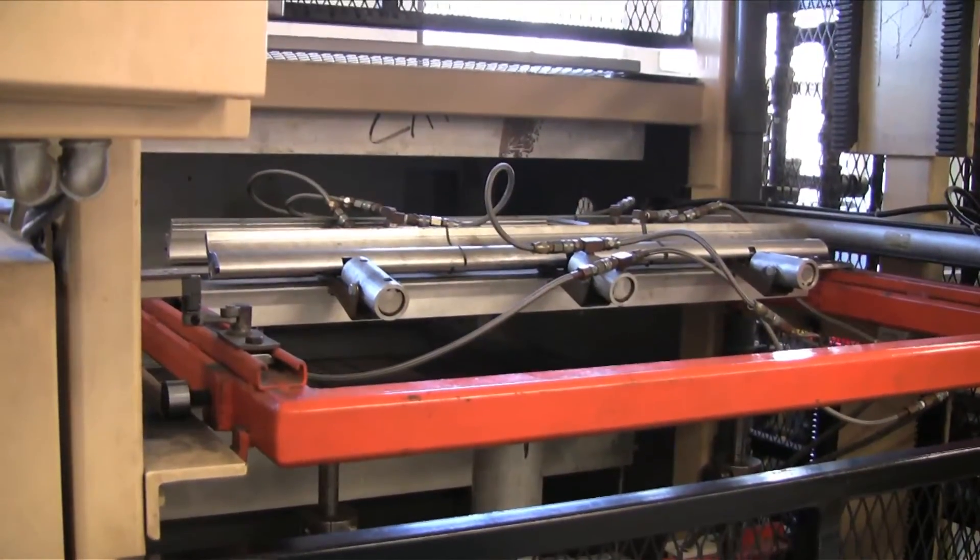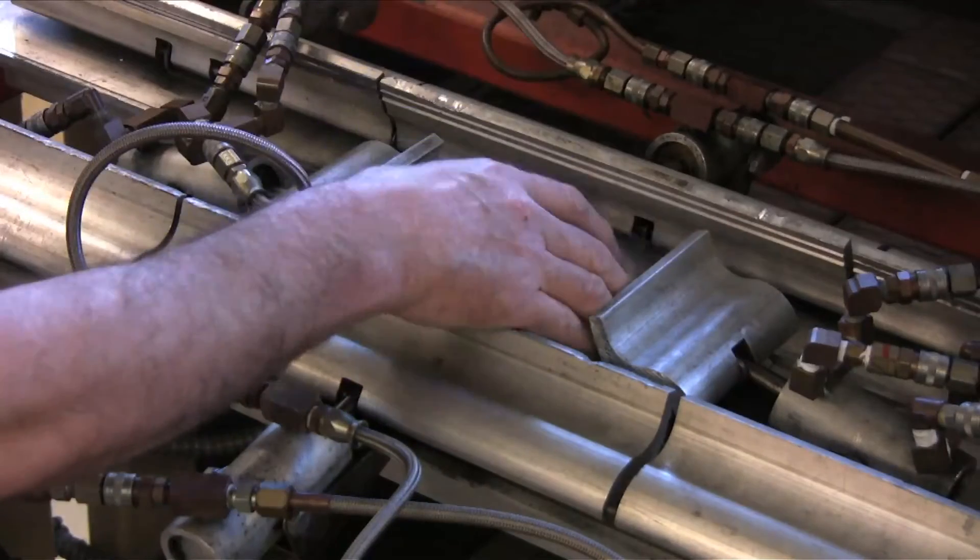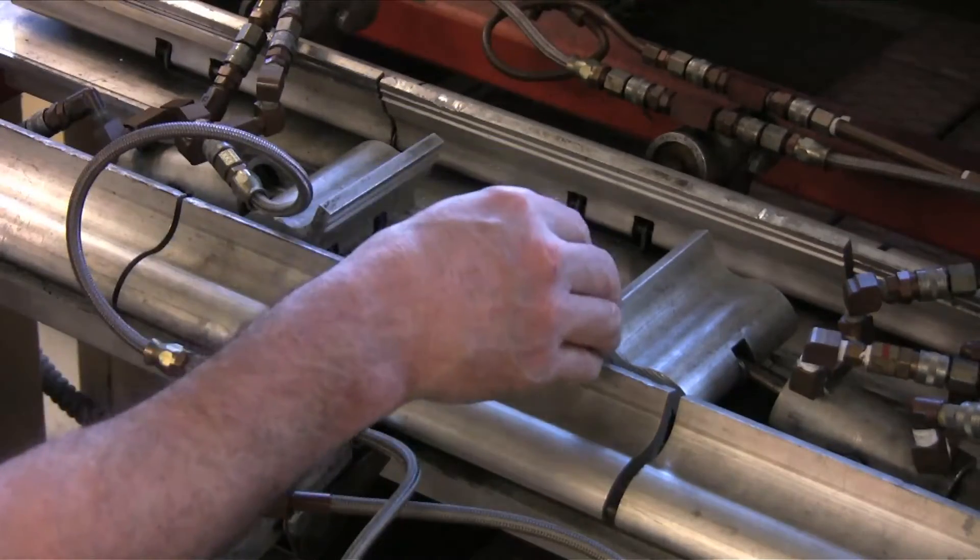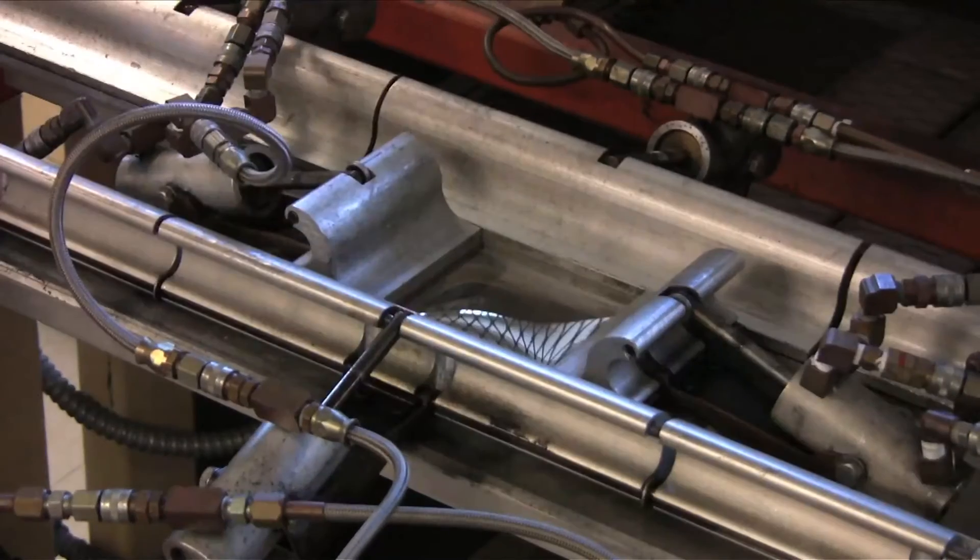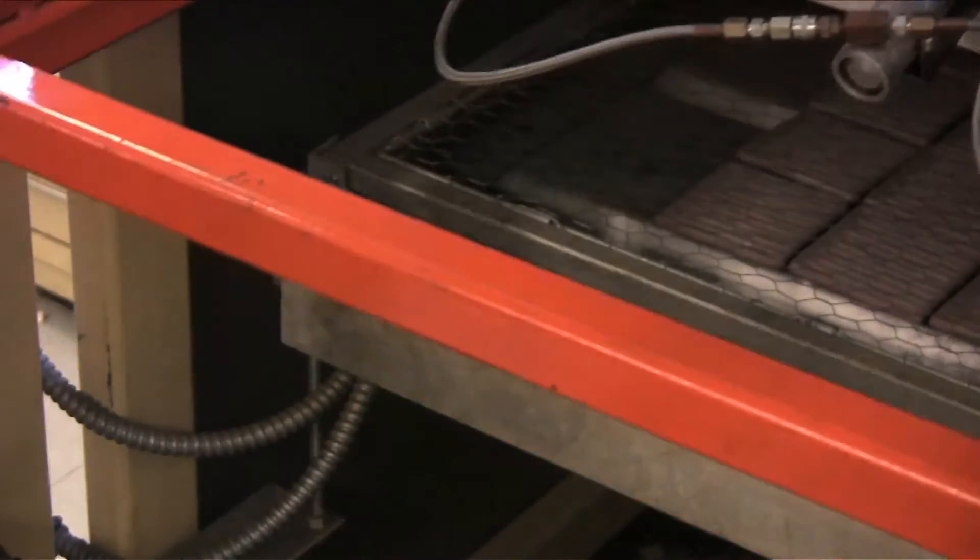Thermoforming takes a heated sheet of thermoplastic material and elastically deforms it above its glass transition temperature. The sheet is first clamped into a movable clamp, which is then sent into an oven to heat the sheet.